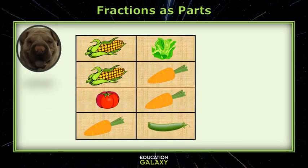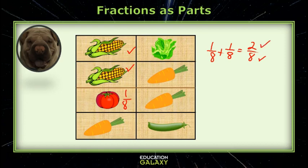Let's look at this problem. This vegetable garden is cut into eight equal parts, so each part is one-eighth. If I want to know how much of the vegetable garden is planted in corn, it would be one-eighth plus one-eighth, and that equals two-eighths. Remember, when you add fractions, you have to have a common denominator, and you write it down, and then you add the numerators.